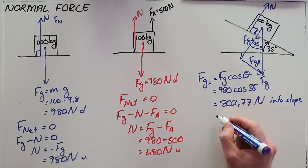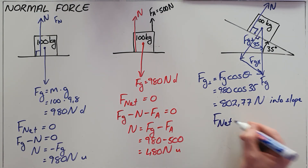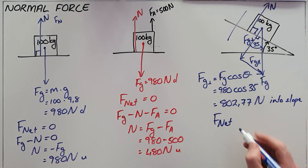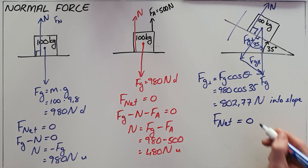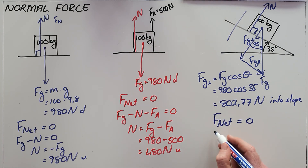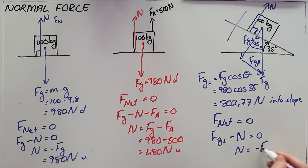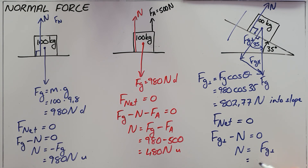To calculate the normal force, we use Newton's first law again, but now looking in the plane perpendicular to the surface, where F net equals zero. In this case, F net is made up of Fg perpendicular acting opposite to the normal force, and therefore the normal force is equal but opposite to the perpendicular component of gravity. We can say that the normal force is 802.77 N directed out of the slope.